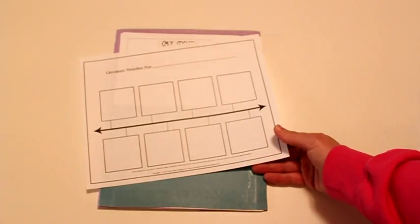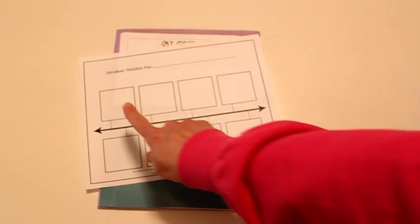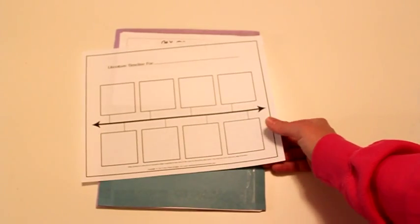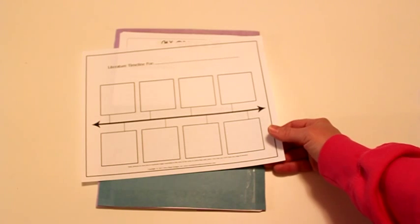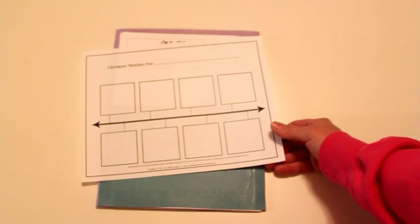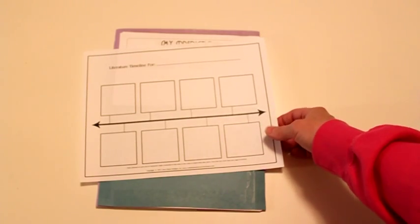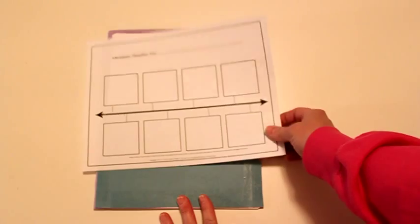Another one is this storyboard timeline, and this one is for them to just keep track of major events in the story as they read them. You can either have them write in these or draw pictures, it's totally up to them. I really let them have fun with this. I want them to enjoy reading and enjoy doing these. I don't want it to be another boring task that they have to do. My kids usually like to draw pictures, but they can do whatever they want.